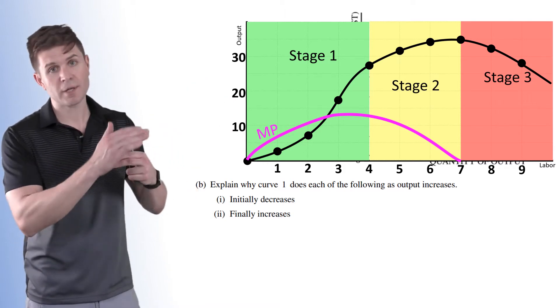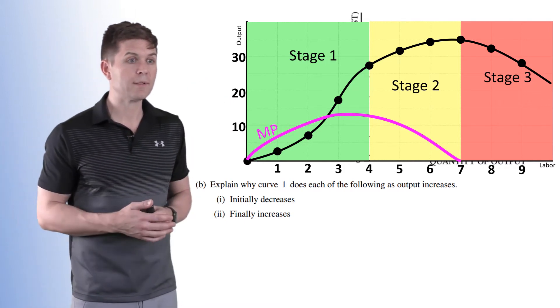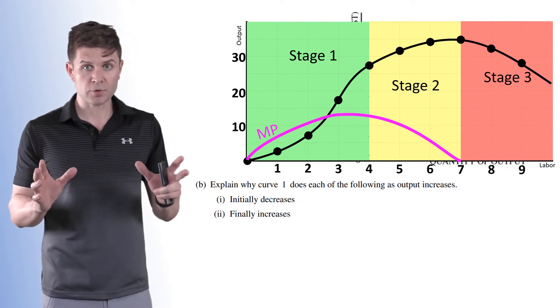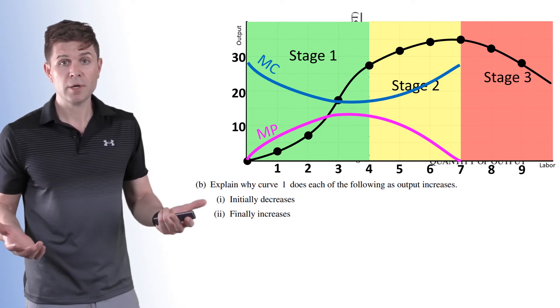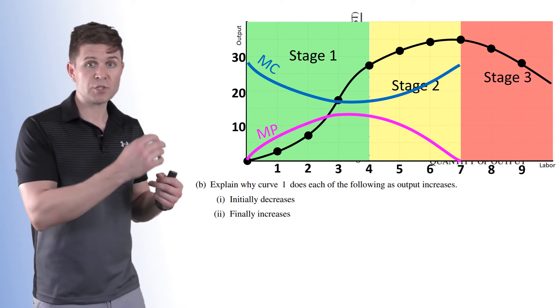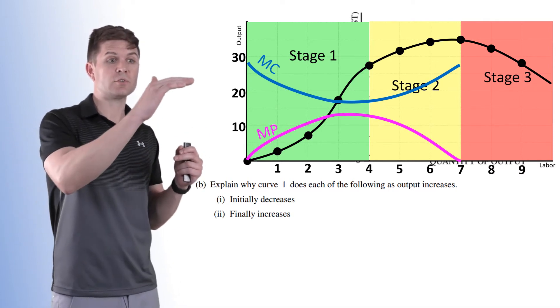When it hits stage three, it's going to go negative, but we're not worried about that part here. Now our marginal cost curve is basically the inverse of our marginal product curve. Because as diminishing returns kick in, marginal cost starts to go up.